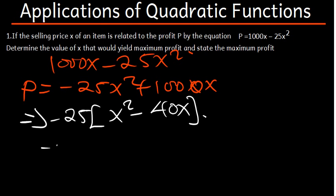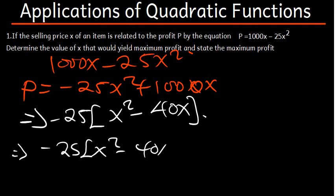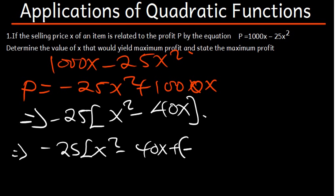Next, we apply completing the square: negative 25 times open bracket X squared minus 40X. We take half of 40, which gives us 20, but since it's negative 40 the half is negative 20. So we add plus negative 20 squared, then subtract the same negative 20 squared.